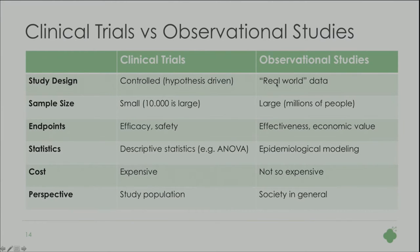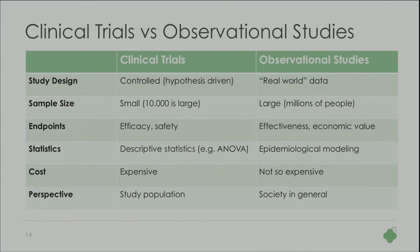Real-world data is typically also a lot larger in sample size. In EMIF we have 50 million patients, and in the OHDSI community there are 650 million patients already mapped to their data model. The endpoints are different, and the statistics is quite different — where in Transmart we might do a t-test, in a full epidemiological analysis you need to do modeling, propensity score adjustment, and all these kinds of things. The cost and the perspective are also quite different, and observational studies are much less costly to carry out than a complete clinical trial intervention study.